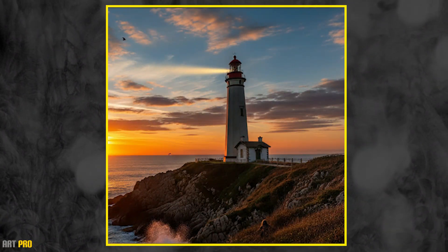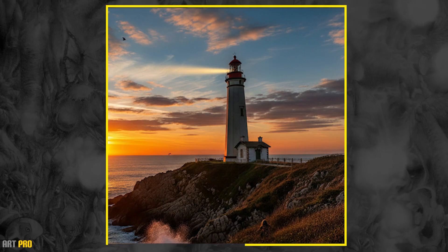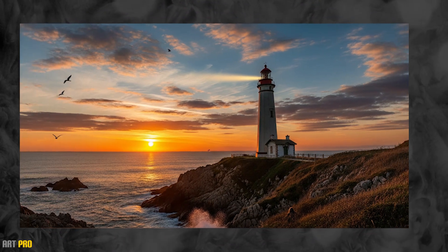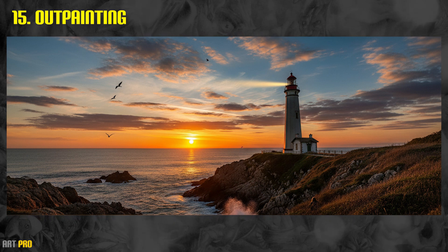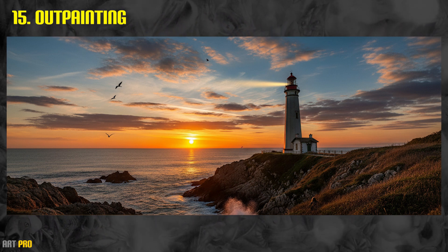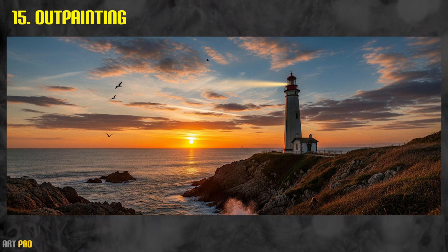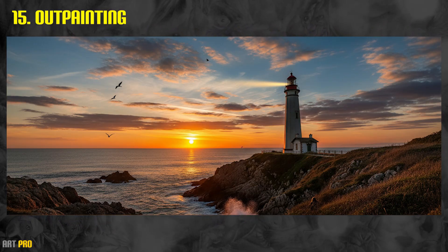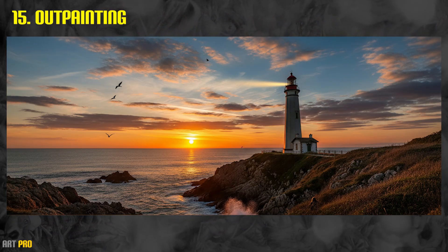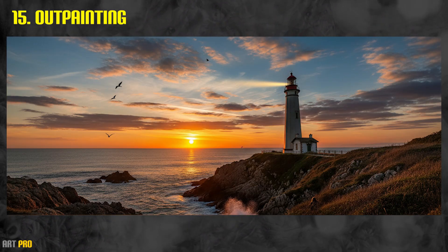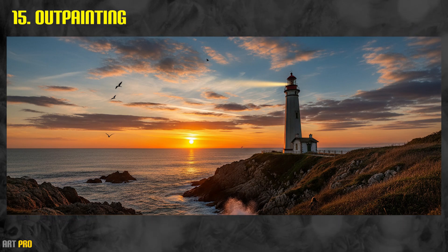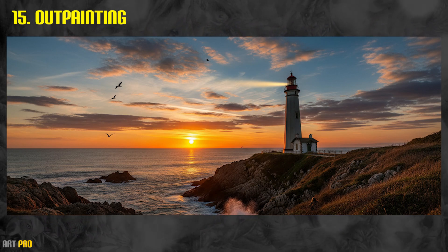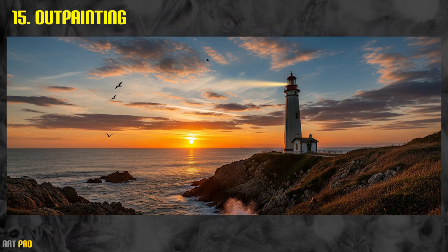Given an image — in this case of a lighthouse at sunset — we can extend it beyond its limits, which is known as outpainting. It perfectly maintains the style of the image, in this case photorealistic, and is consistent with the lighting and elements. It has added more land with rocks, sea, and even sky with clouds and some birds. It is not a unique function — we have it in other applications like Midjourney, DALL·E, or even Photoshop in what it calls generative expansion — but I find it particularly useful for photographers and designers.